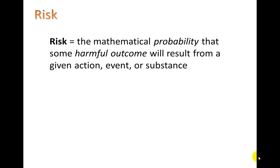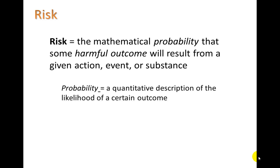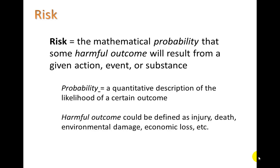By risk, we mean the mathematical probability that some harmful outcome will result from a given action, event, or substance. Probability means a quantitative description of the likelihood of a certain outcome — 100% means it's going to happen, 0% means it's not going to happen. By harmful outcome, we could mean injury, death, environmental damage, economic loss, etc.